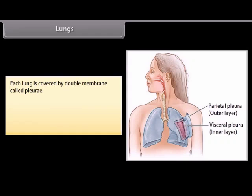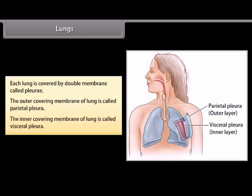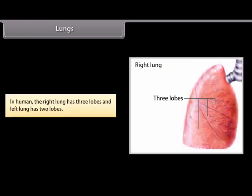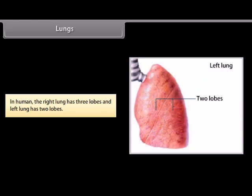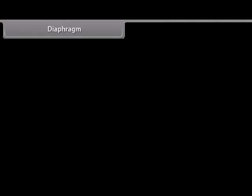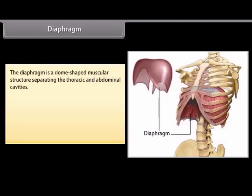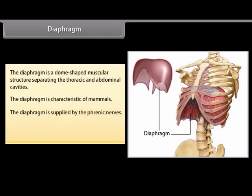Each lung is covered by a double membrane called pleura. The outer covering membrane of the lung is called parietal pleura, and the inner covering membrane is called visceral pleura. In humans, the right lung has three lobes and the left lung has two lobes. The diaphragm is a dome-shaped muscular structure separating the thoracic and abdominal cavities. It is characteristic of mammals, supplied by the phrenic nerves, and puncturing of the diaphragm results in stoppage of breathing and is fatal.